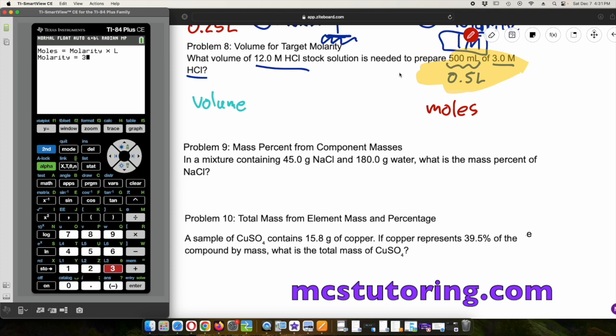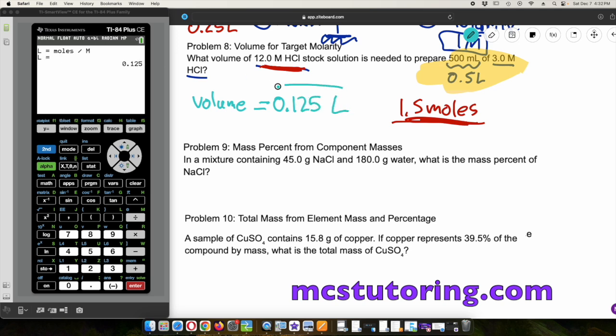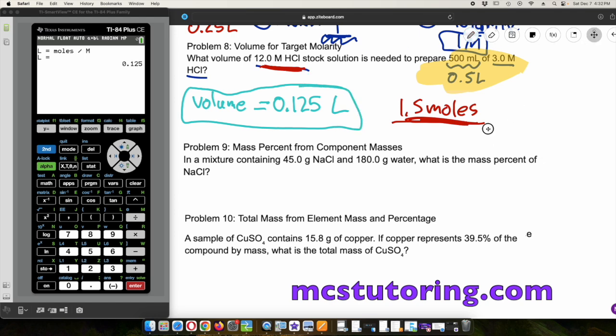We're going to try to solve for moles first. The molarity is three, and the volume is 0.5. I'm not going to fall for your tricks. 500 milliliters is 0.5 liters. So it's 1.5 moles. That's what we're dealing with. Doing 1.5 moles with a 12 molarity stock. Now solving for the volume, the moles is 1.5 from there, that's that red underlying value. And the molarity is 12. So the volume is going to be 0.125 liters.